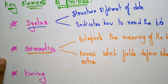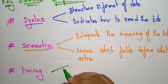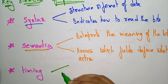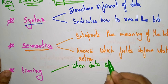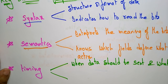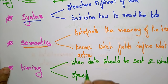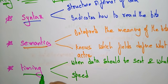Now let's see what timing is as a key element of protocol. Timing refers to when data should be sent and what data has to be sent. It also covers the speed at which data should be sent or the speed at which it is being received.